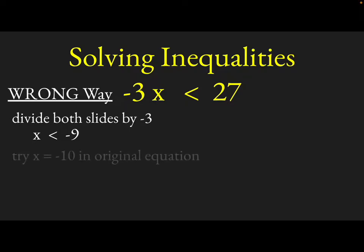Well let's try this. If we try a value that's less than negative 9, like x equals negative 10, and put that back into this original equation, what you'd find out is negative 3 times negative 10 would actually give you positive 30.